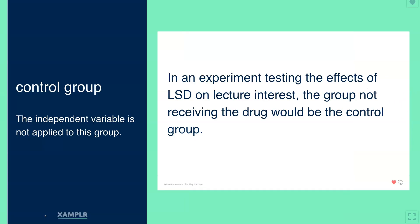So now let's look at some control groups. That's the group that does not get the independent variable, meaning nothing happens to this group — the change is not present.